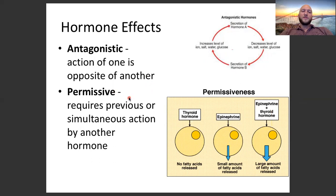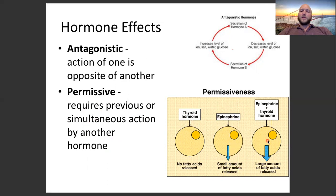Permissiveness requires the previous or simultaneous action of another hormone. For example, thyroid hormone alone causes no fatty acid release; epinephrine alone causes a small amount. But when epinephrine and thyroid hormone interact with the cell together, a large amount of fatty acids is released. Thyroid hormone needs epinephrine to have its effect, and when both are present you get a much larger effect than epinephrine alone.